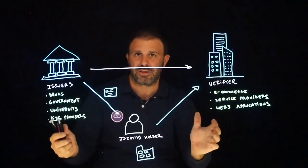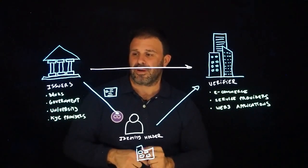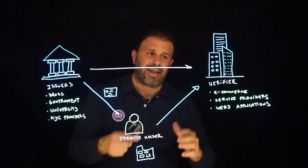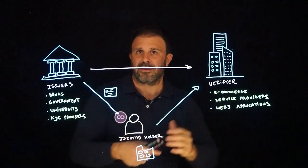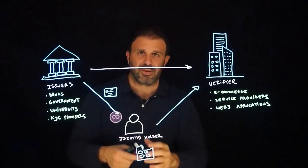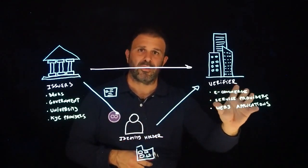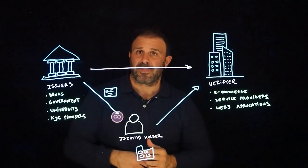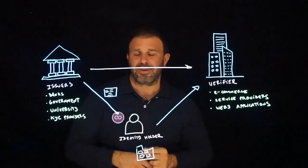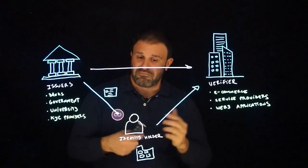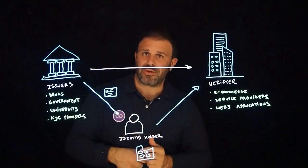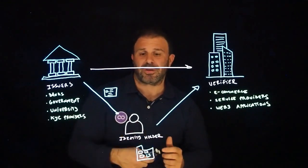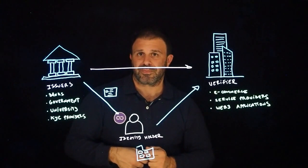Once we understand this triangle of trust, we have a clear view of why self-sovereign identities enable new ways of doing business online. Once we have trusted identities, we can operate online in the same ways we can operate in the real world, allowing for new business cases, new use cases, new possibilities. And that is the real power of these self-sovereign identities — it's about privacy, it's about user control of their data, but most importantly it's about the potential in user experience and new business models. Thank you.